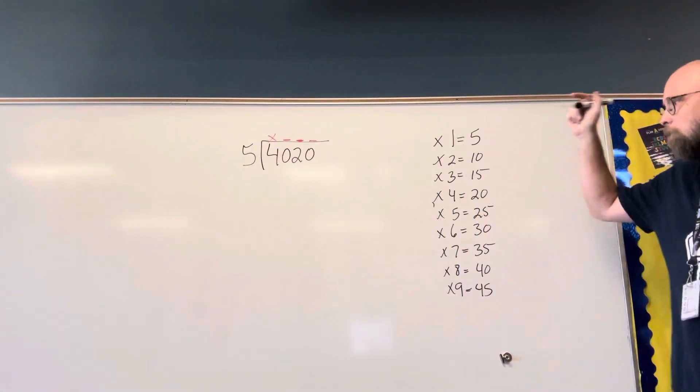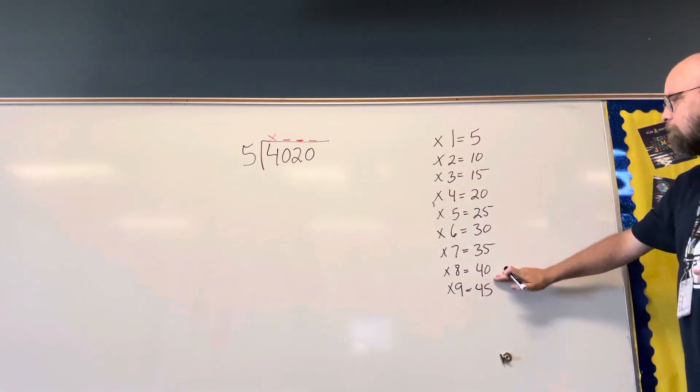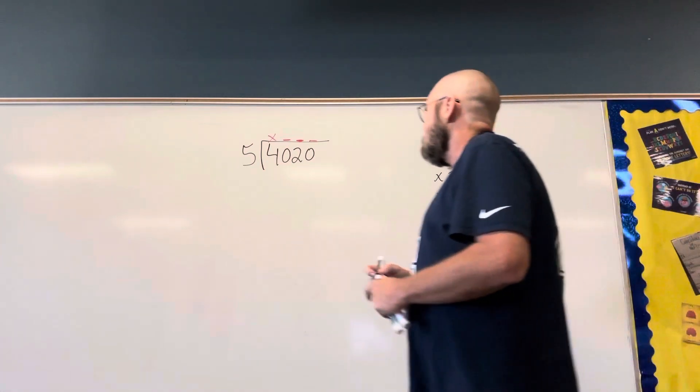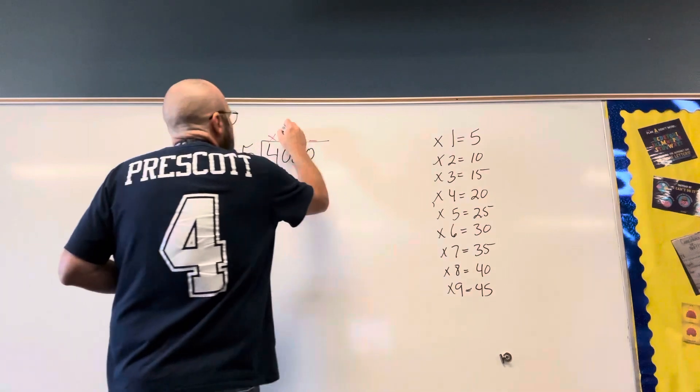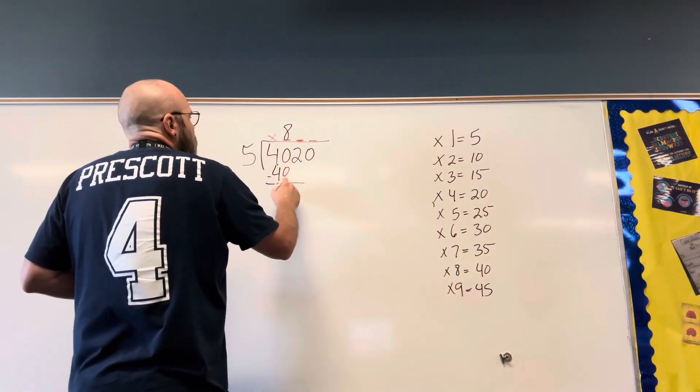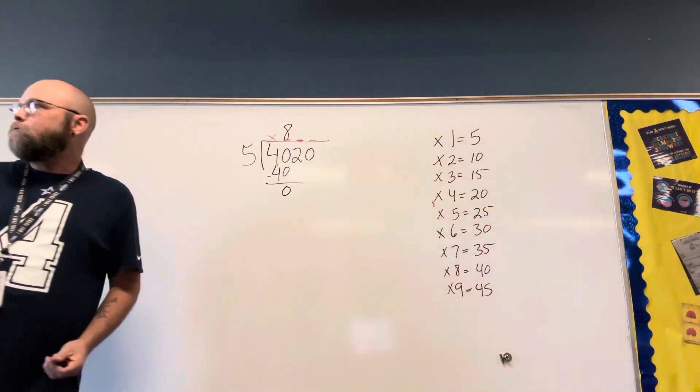I'm going to come over here, I'm going to get as close to 40 as I can, and it's 8. So times 8 equals 40. So I have 8 in my hundreds place.